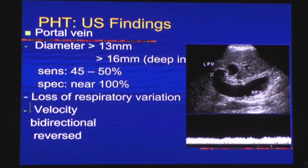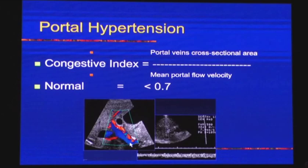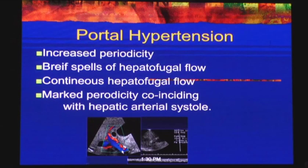In portal hypertension, portal vein shows loss of respiratory variations, decreased velocity, and increased congestive index. The congestive index is portal vein cross-sectional area divided by mean portal vein velocity — normal value is less than 0.7. This is an important parameter in the diagnosis of chronic liver disease and portal hypertension.